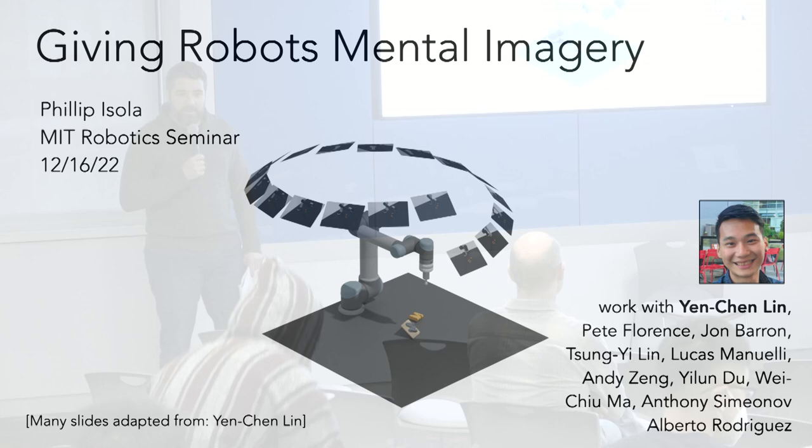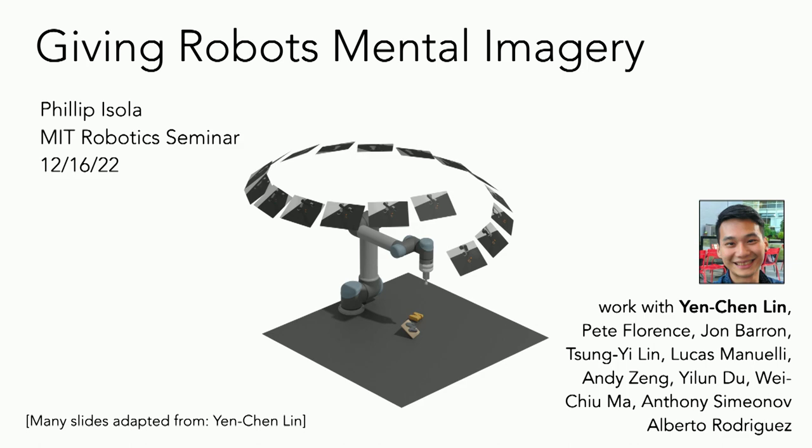He's not here to talk about that work though — he's here to talk about mental imagery, that fundamental capacity we have to imagine pictures in our head, picture something and spin it in your head, think about it, and how that relates to robotics and how we can think about it from the perspective of NeRF in particular. It's great to have you here, Phil. Thank you for making the time.